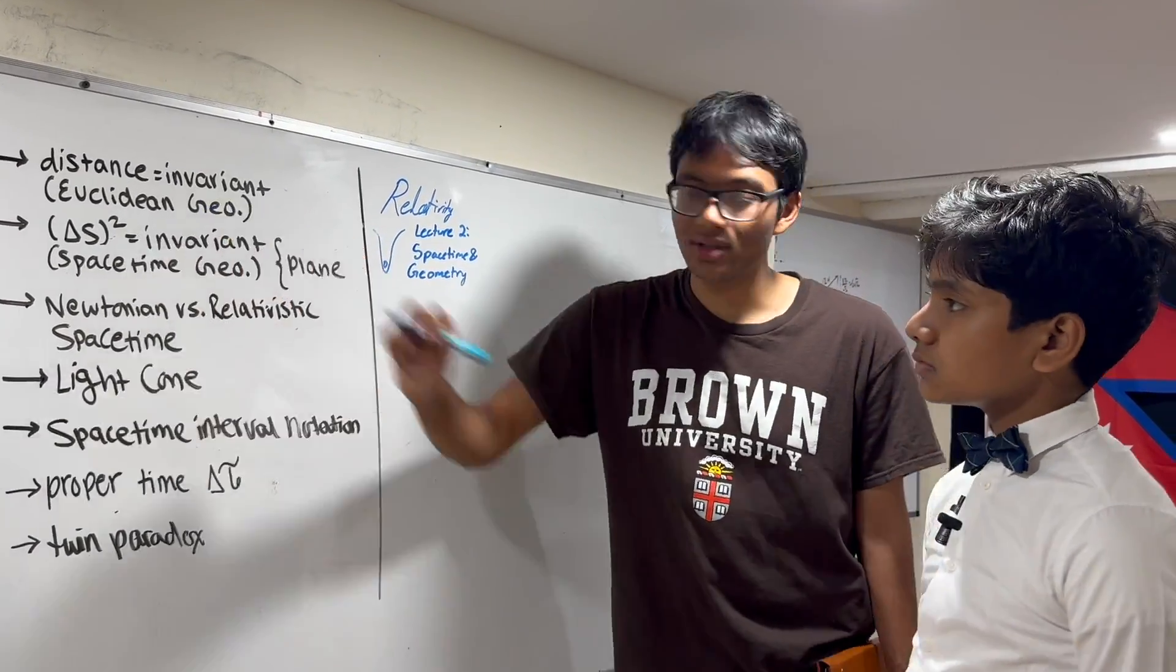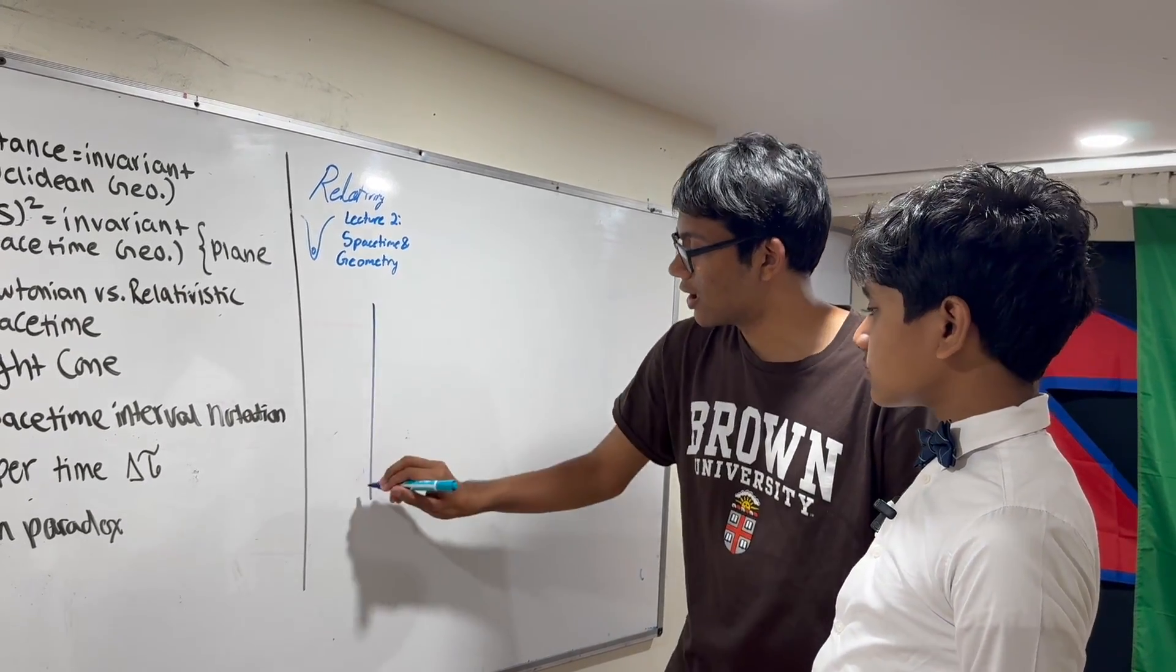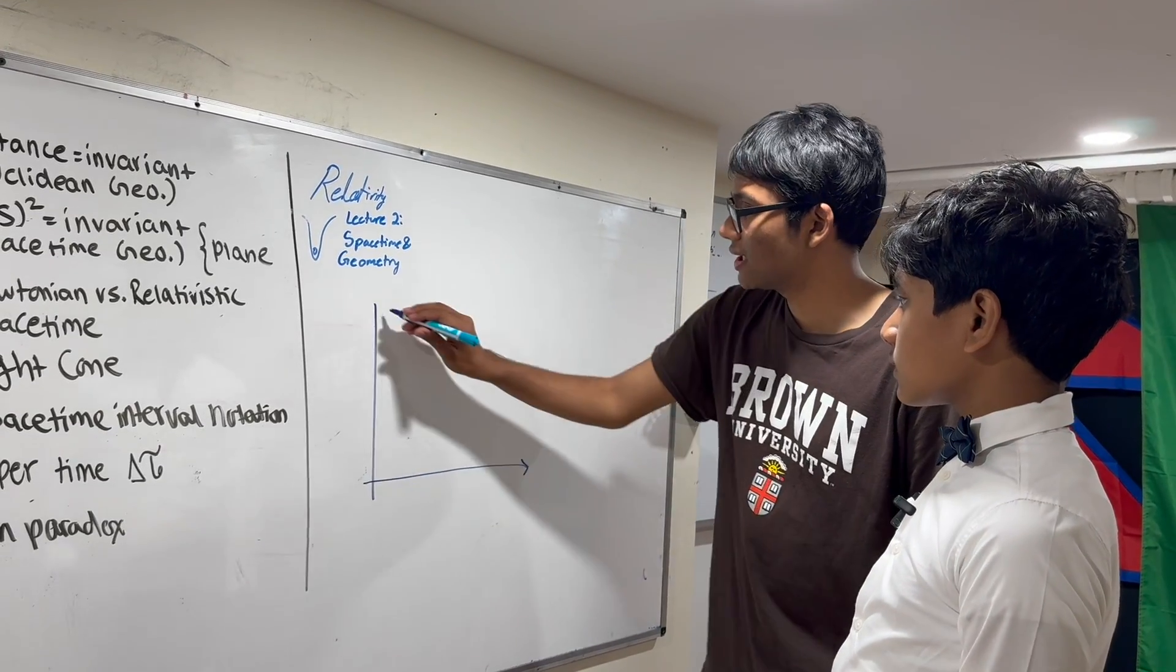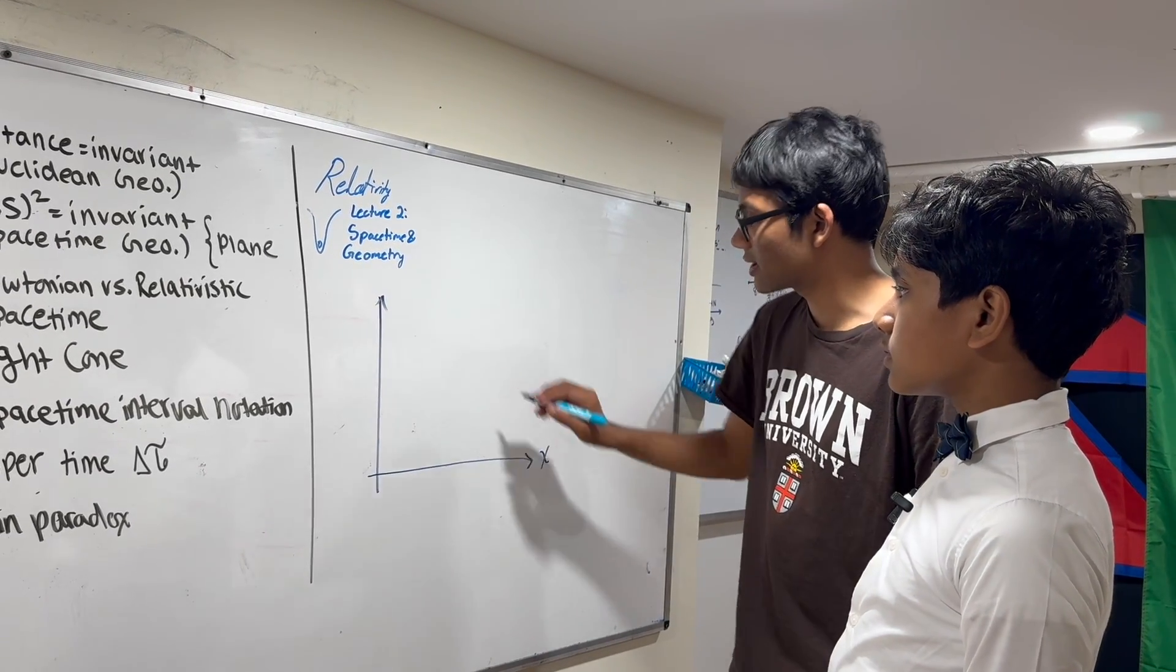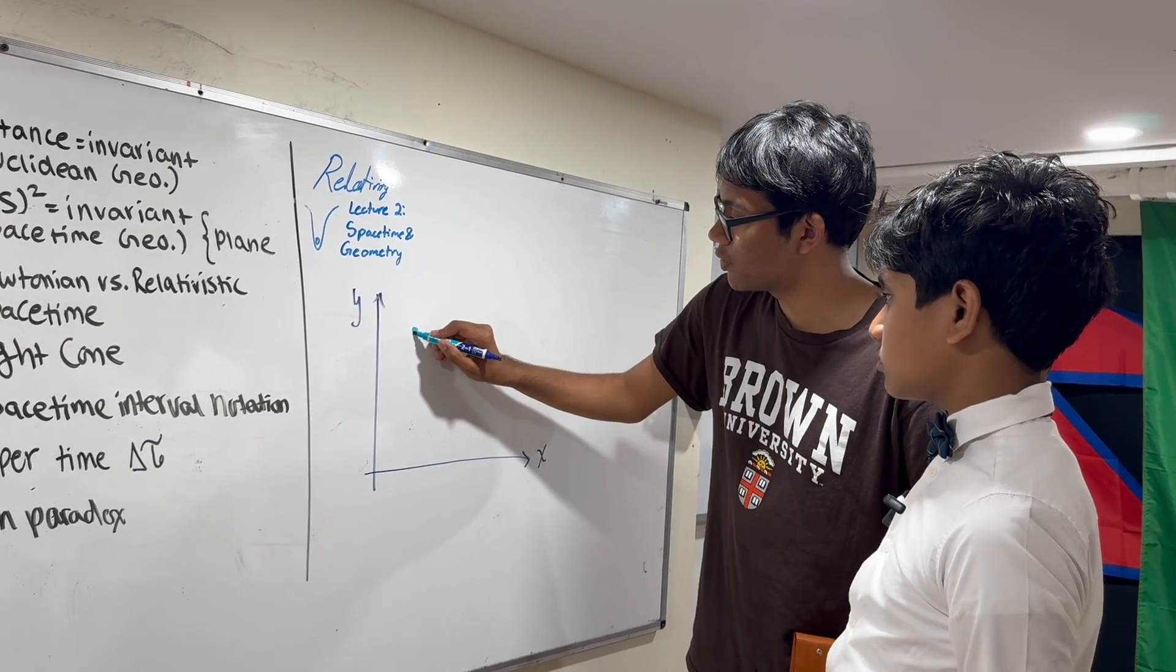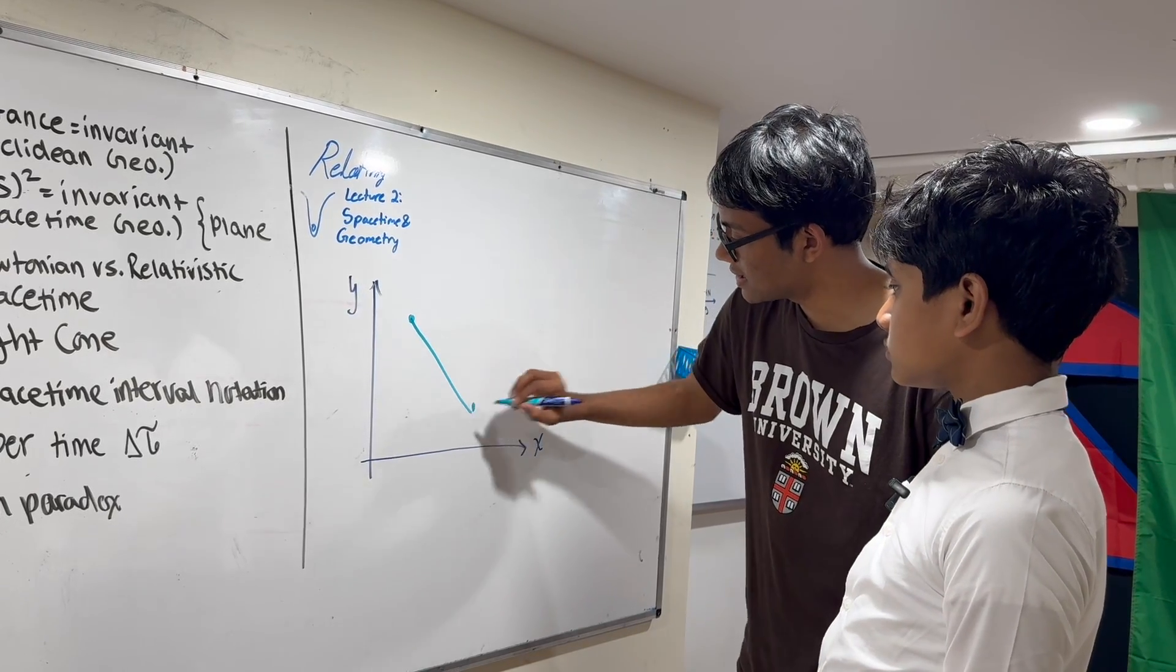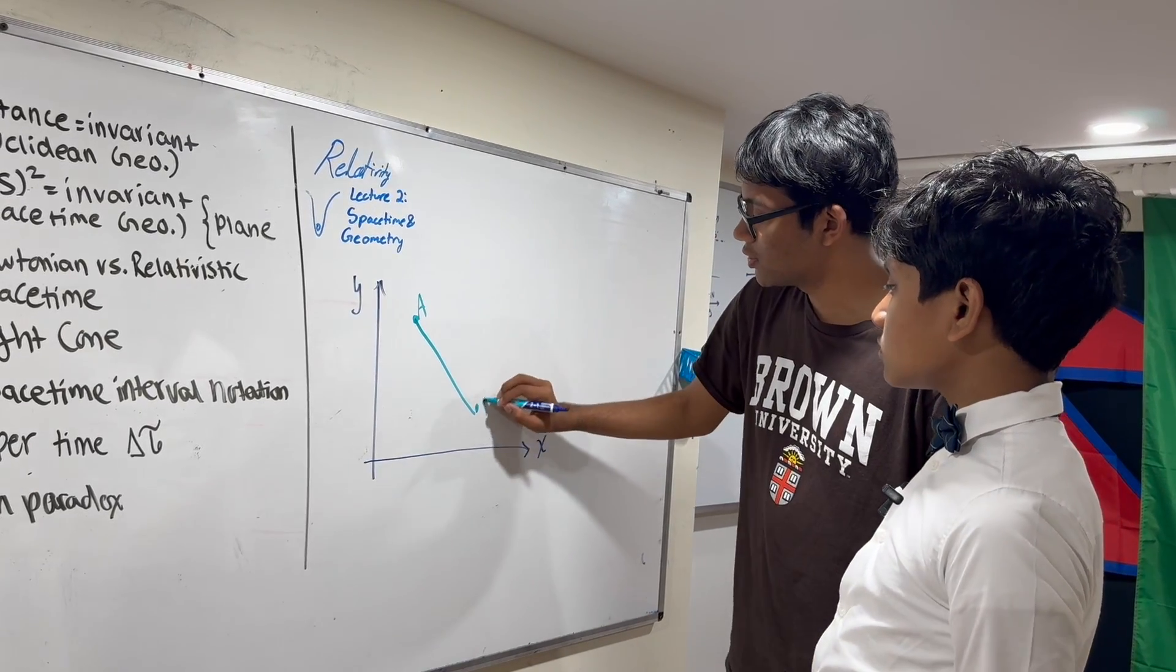The first step is we'll talk about how distance is invariant in regular geometry. Let's say you have a coordinate plane with x-axis and y-axis. Let's say I have two points, point A and point B, and I find the distance between these two points.